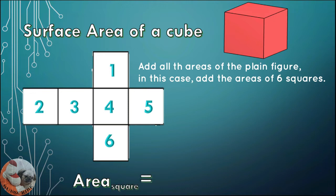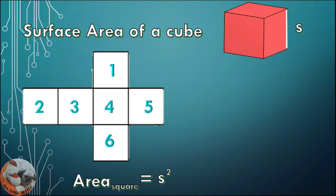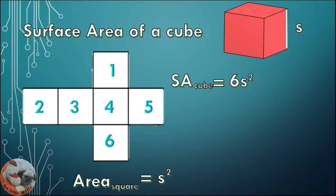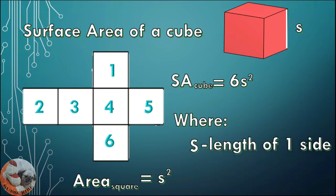The formula for the area of a square is S squared, where S is the side. So the surface area of the cube is equal to 6S². Why 6? Because it has 6 faces, where S is the length of one side.